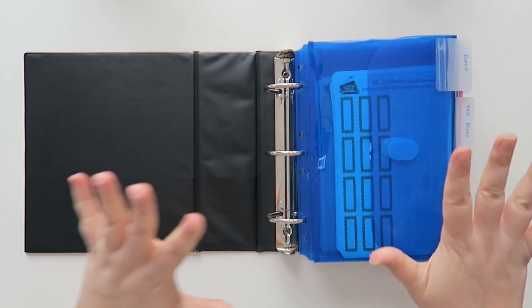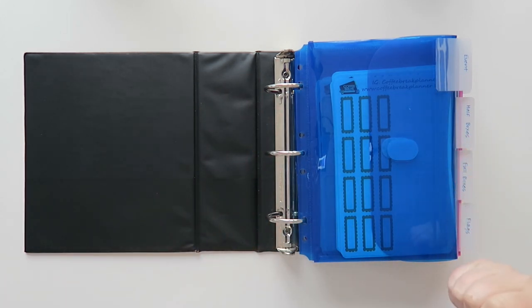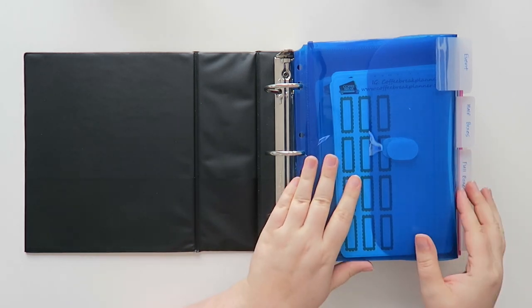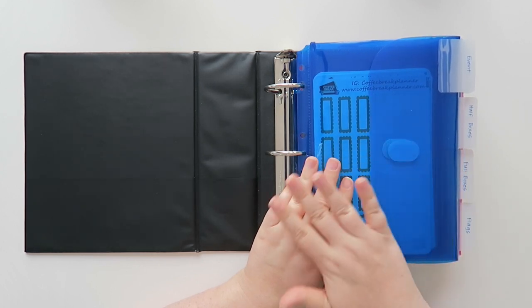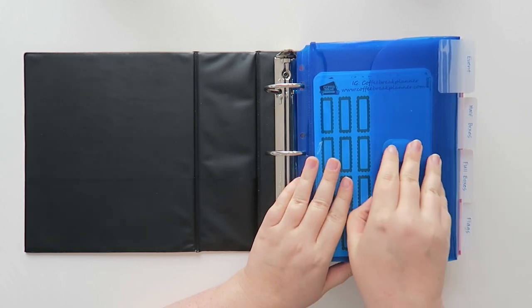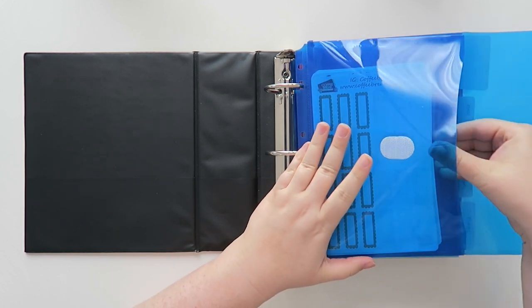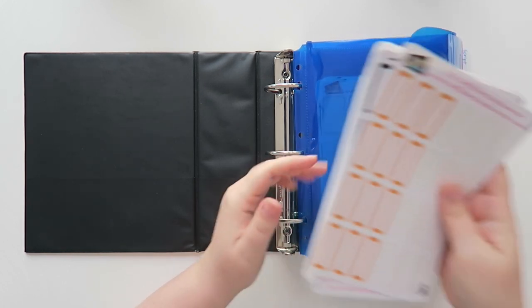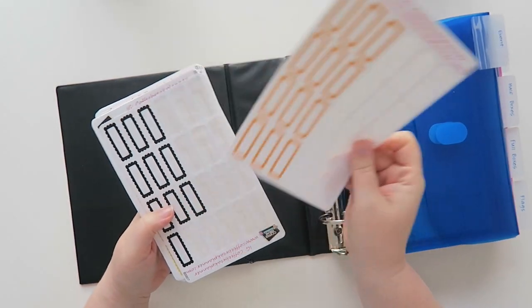I have my little Coffee Break Planner thing that I made over here. And yeah, so let's just get right into it. I do have these categorized by category. I have lots of different things to share. The first category is my event category, which is my favorite category because it's got my favorite stickers in there.